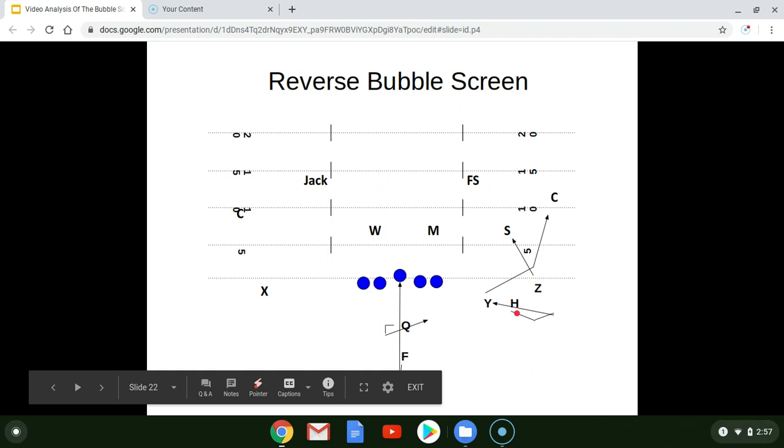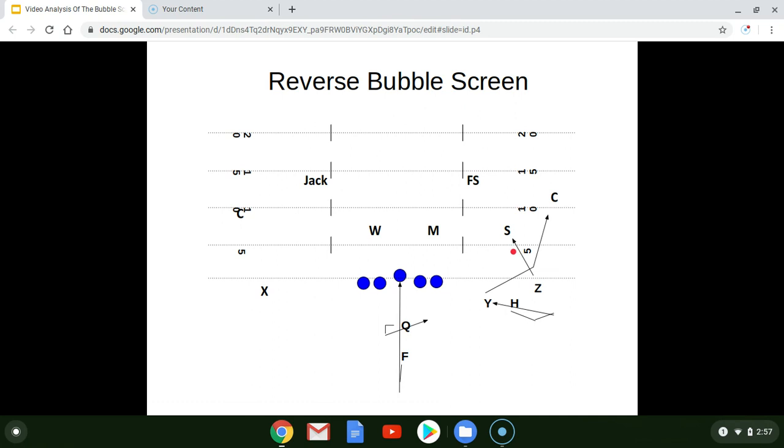except he's going to run his steps towards the sideline like a bubble route. So he'll take his bubble route steps, plant on his outside foot, come back inside, catch the ball, and he will have a crease between the top of the numbers and the hash that he can run in.